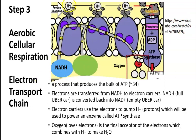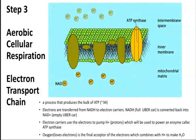Here we see NADH releasing those hydrogen protons, and electrons are then used to power that enzyme to create ATP through ATP synthase. The product is water. The electrons are transported from the NADH to the electron carriers within the electron transport chain. These electron carriers use the electrons to prompt hydrogen protons to power that ATP synthase enzyme to create ATP, and the final product is water.